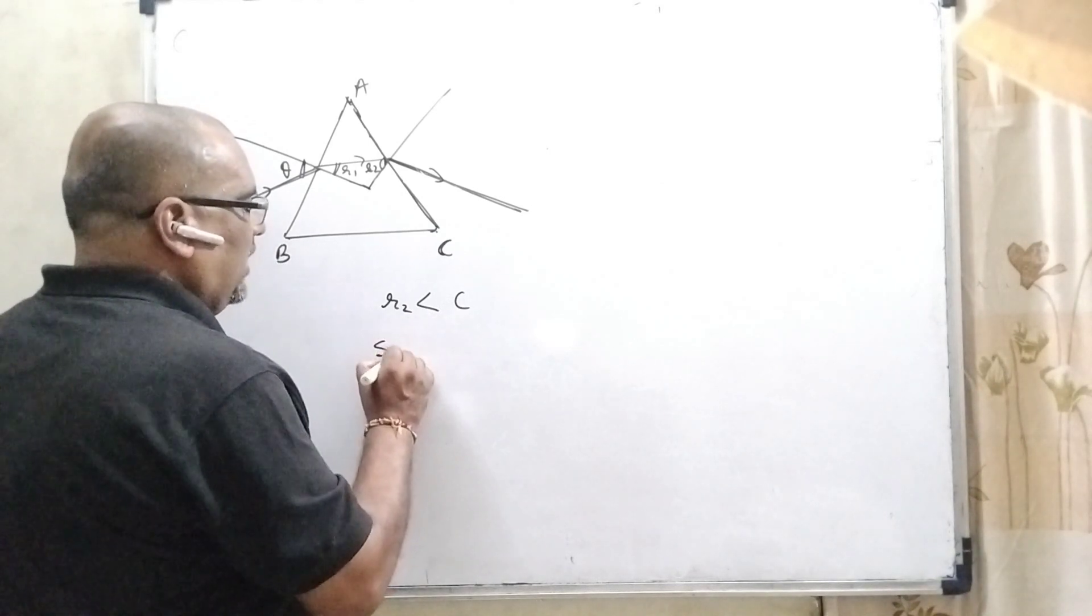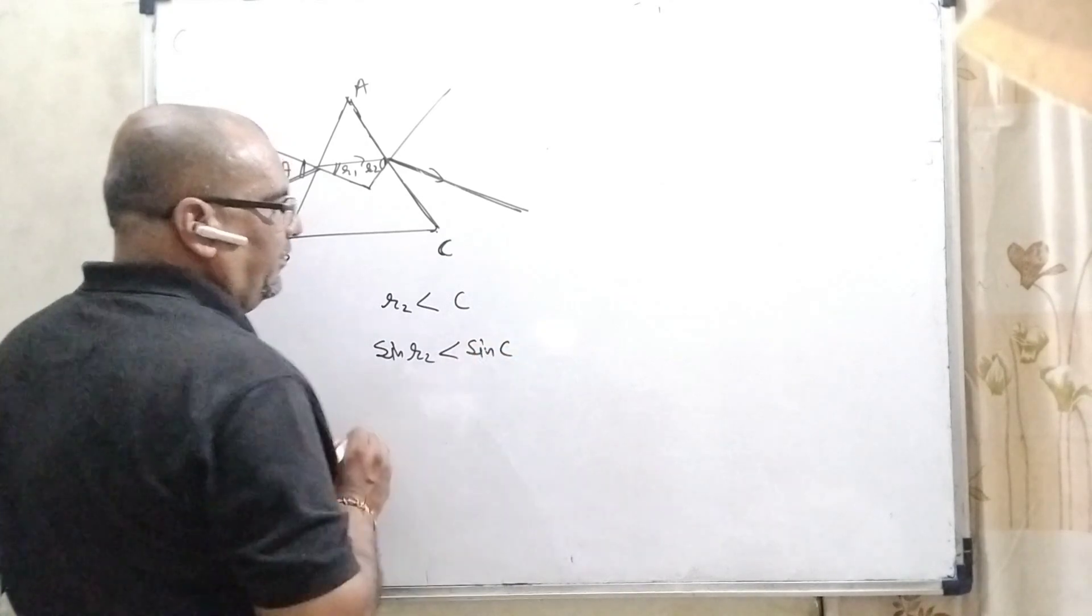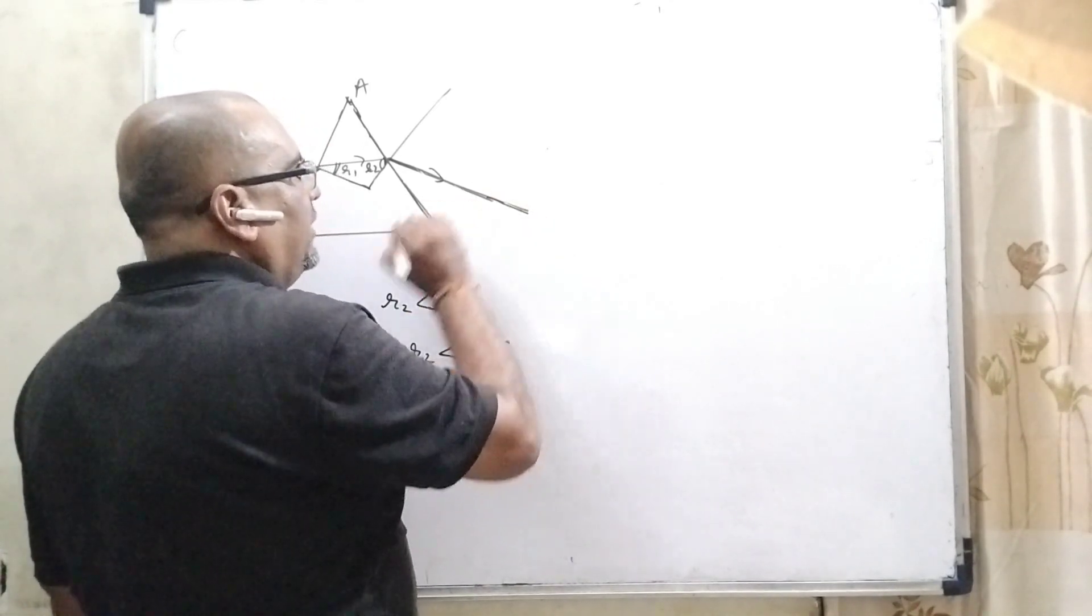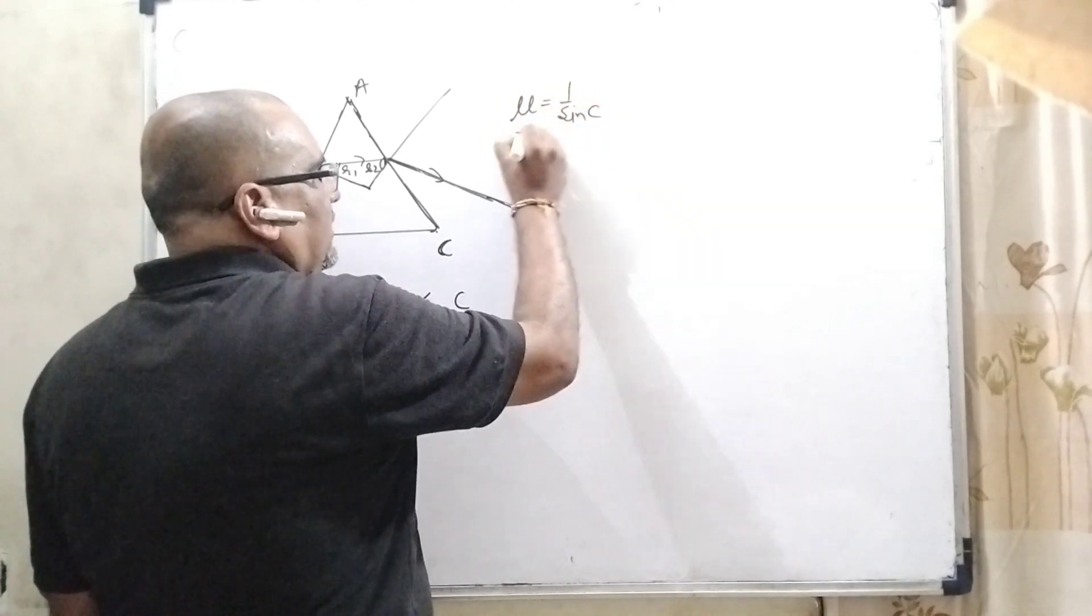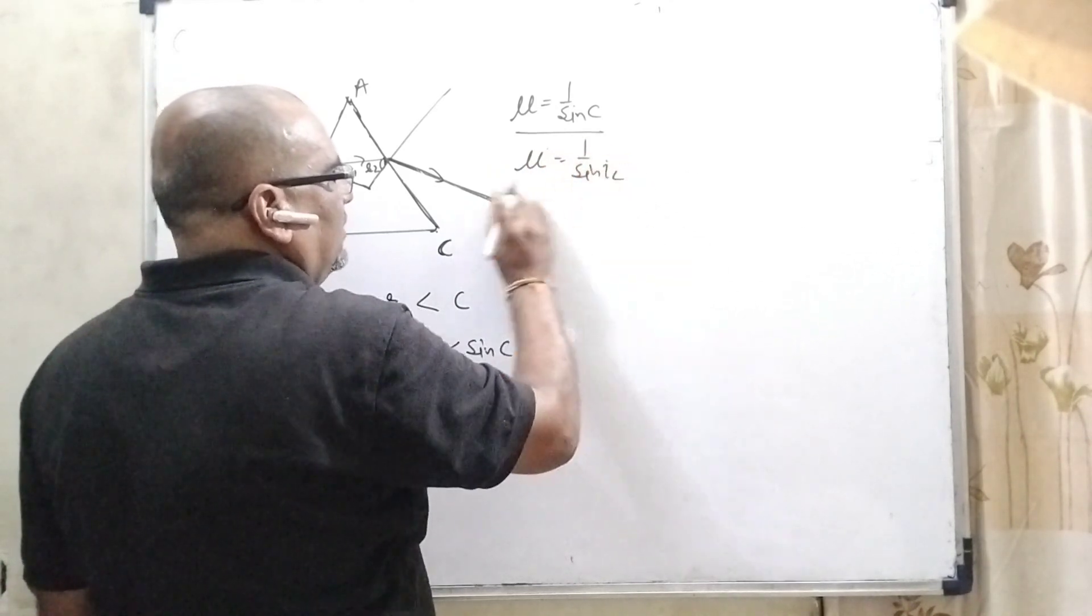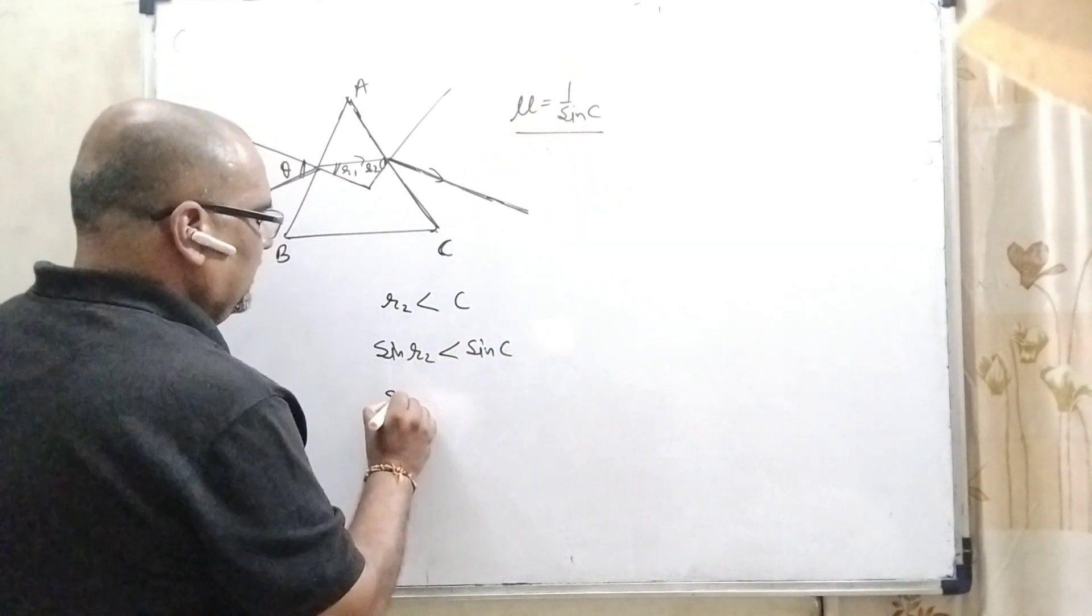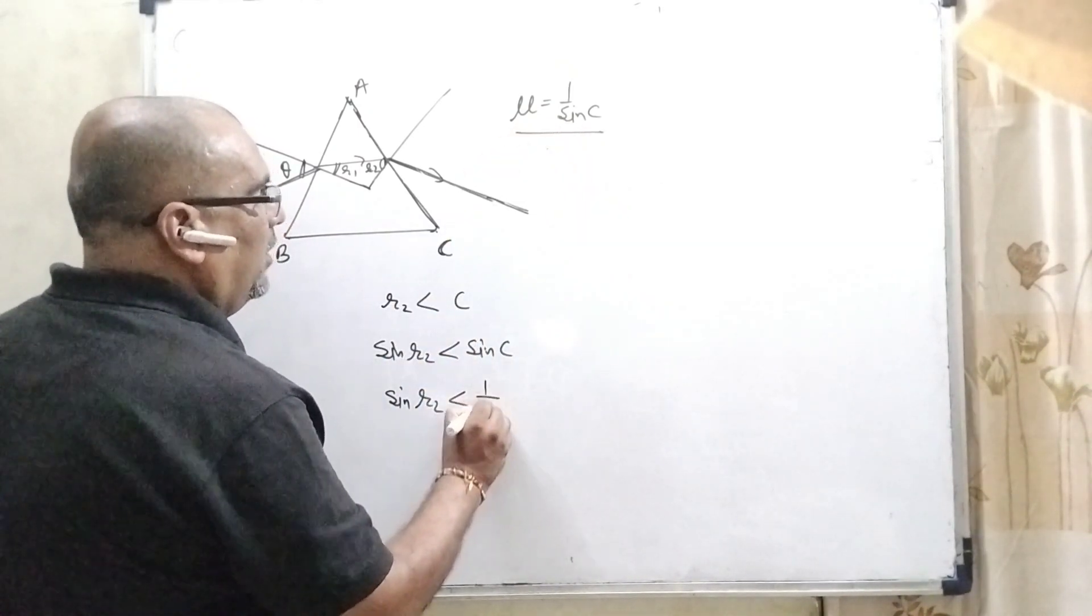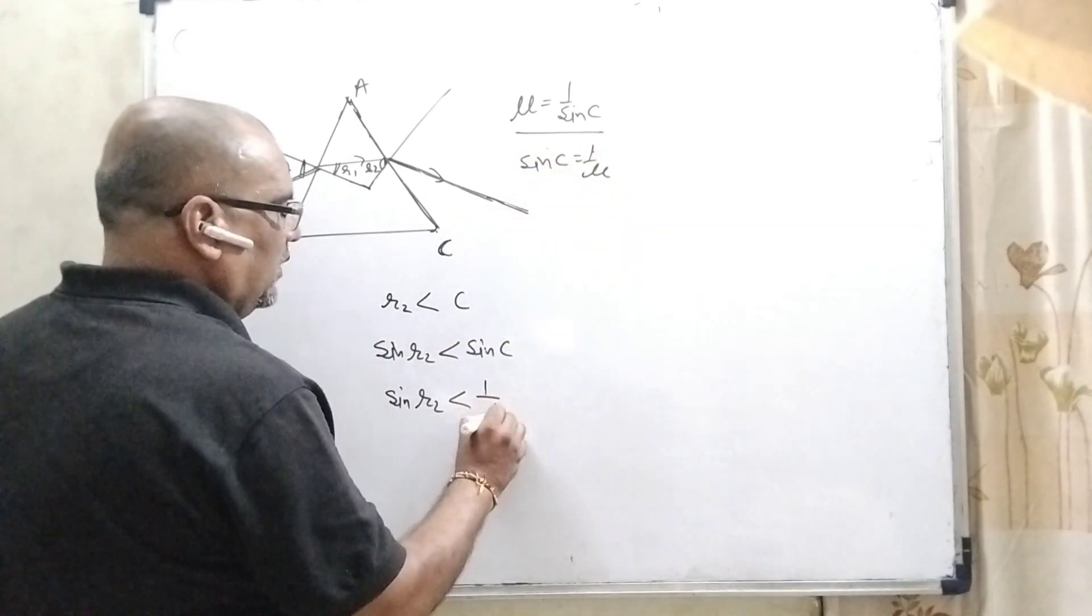By using sin R2 is less than sin C. Here, from the law of total internal reflection, we know that mu is equal to 1 upon sin C. So, here we have using this concept, sin R2 is less than 1 upon, in the place of sin C can be written as 1 by mu. Is it okay?